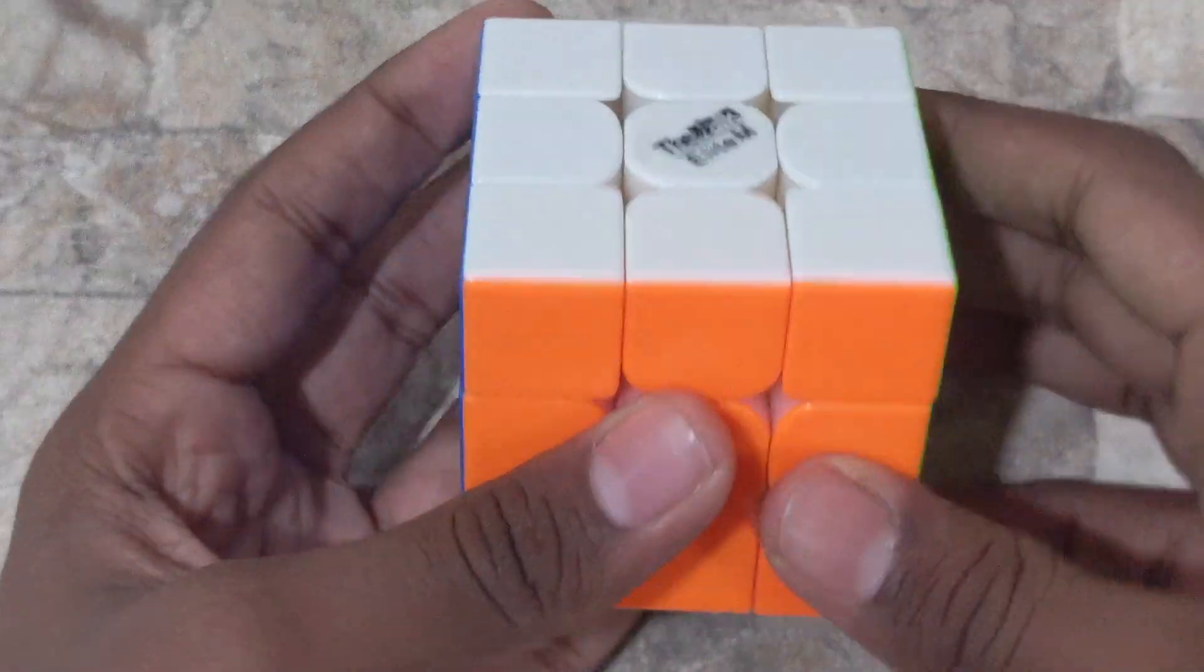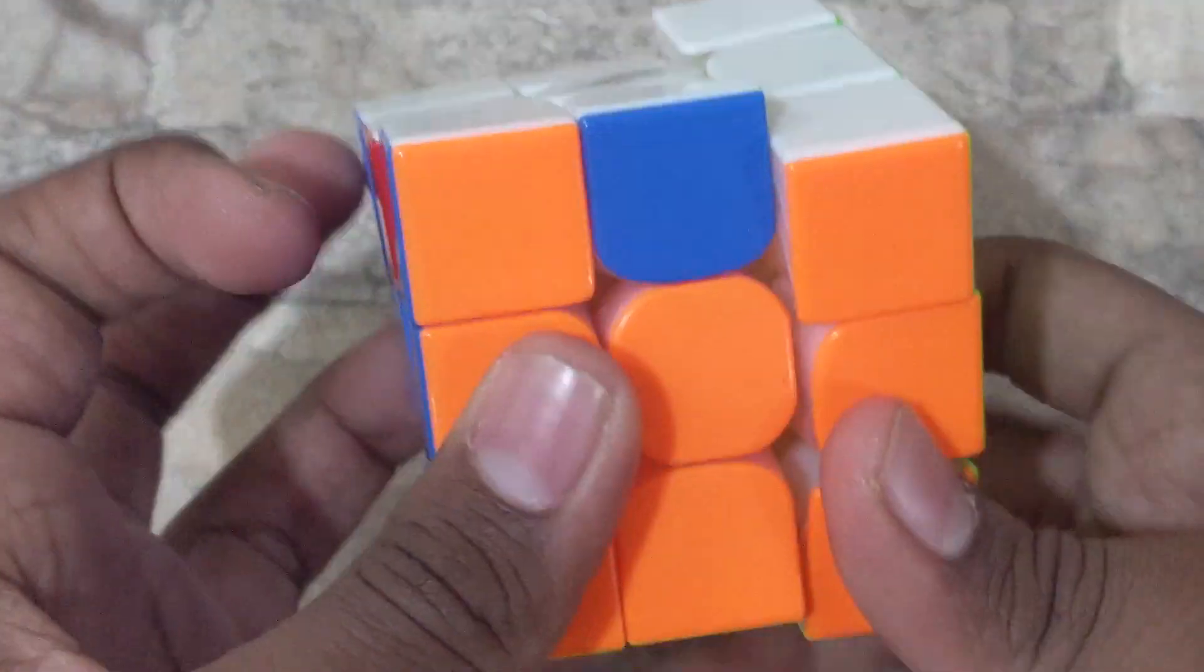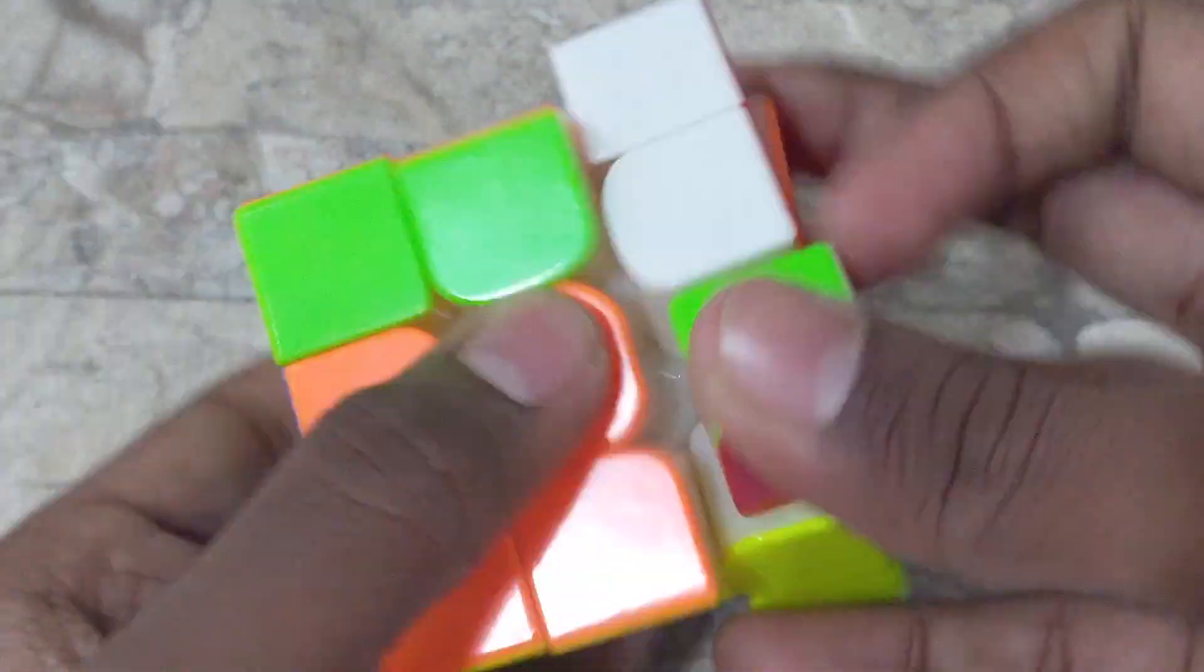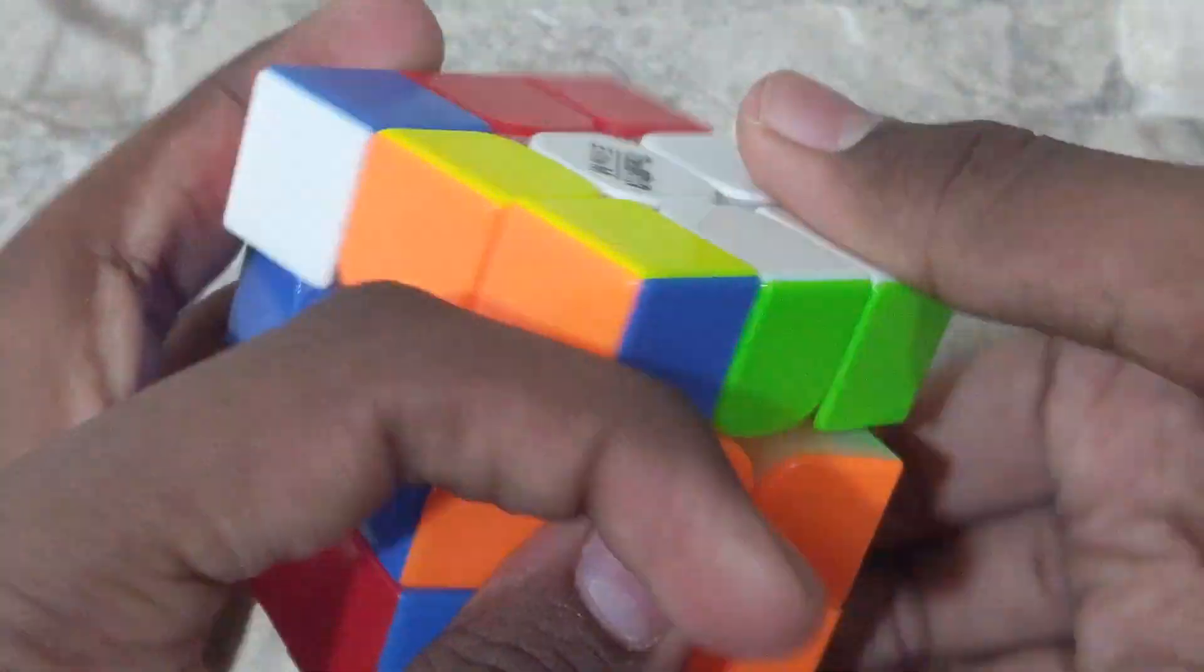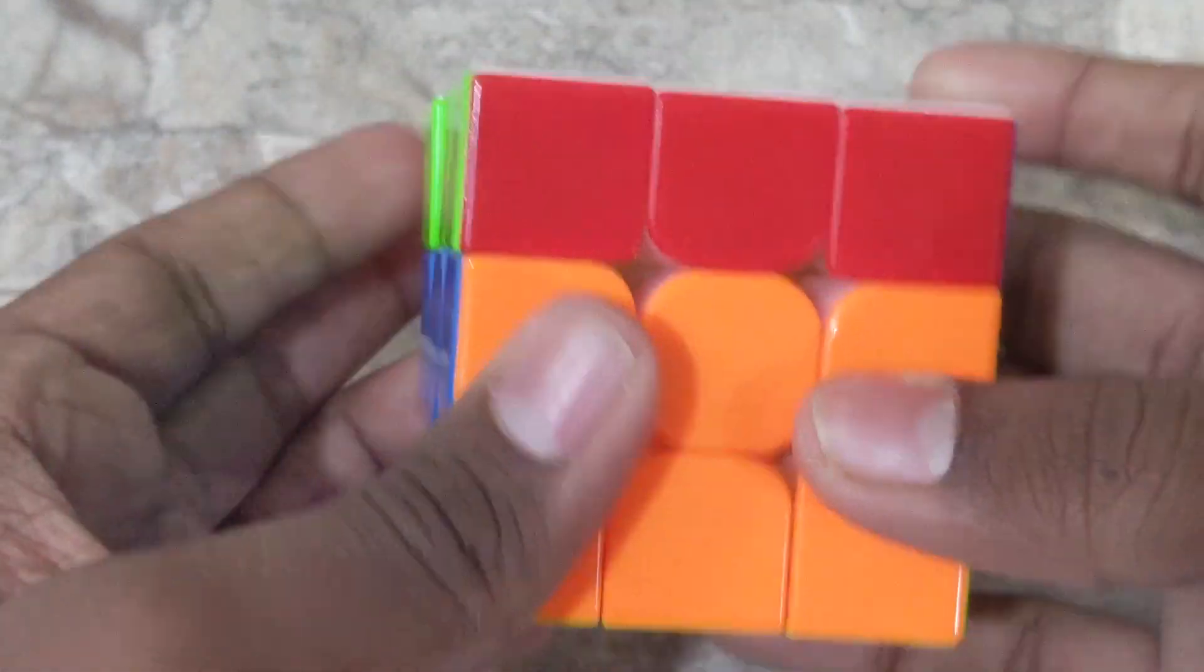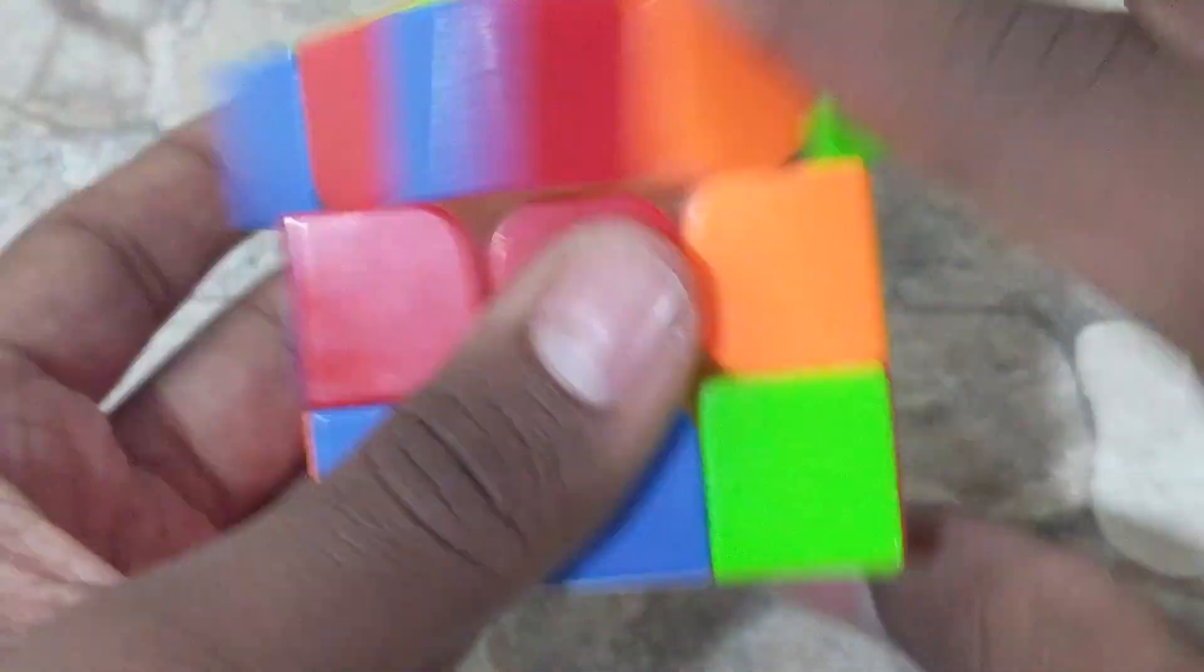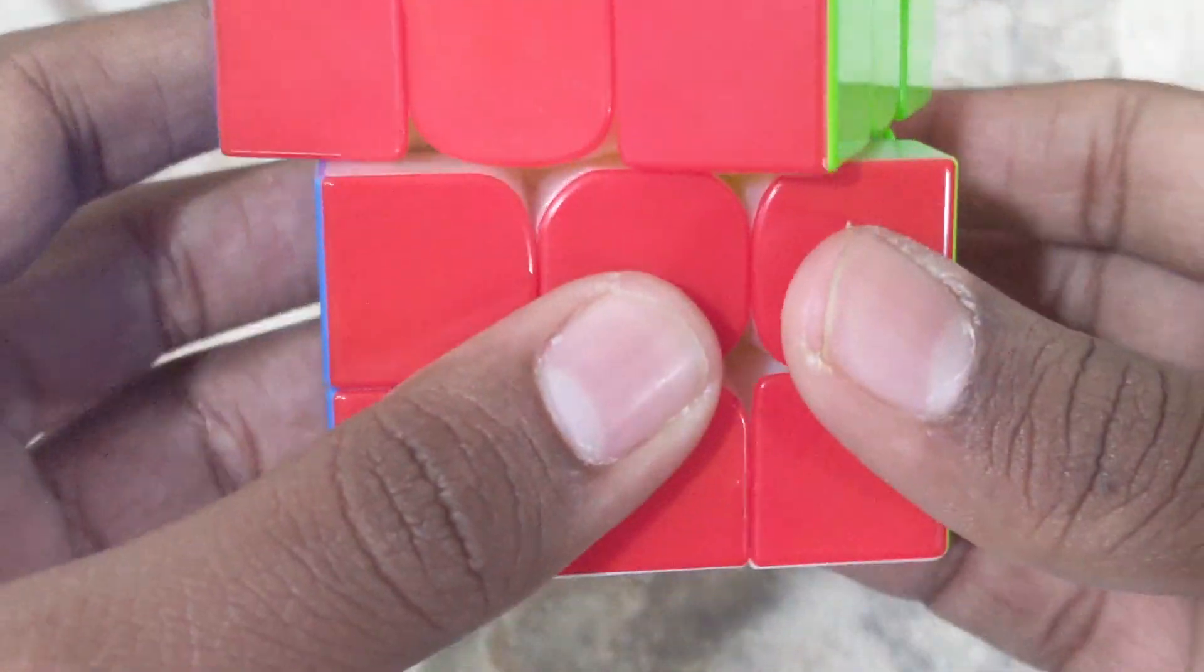The Valk Elite M is very reminiscent of the Valk 3M in my opinion. It has the exact same stability as the Valk 3M, and the feel is more towards the Valk Power M. The feel is very soft, smooth, clicky, and it's also a very quiet cube. Now I'm just going to let you guys listen to this cube. So now let's get into the corner cutting.